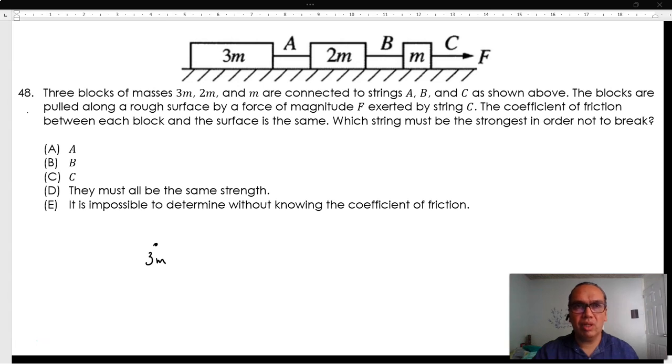The blocks are pulled along a rough surface by a force of magnitude F exerted by string C. The coefficient of friction between each block and the surface is the same. Which string must be the strongest in order not to break?